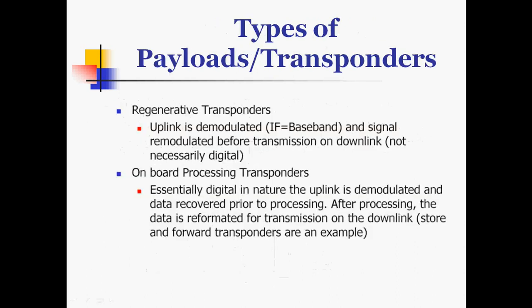There are basically two major types of transponders. Regenerative transponders demodulate the uplink and remodulate the signal before transmission on the downlink. Onboard processing transponders are essentially digital in nature — the uplink is demodulated, data is recovered prior to processing, then reformatted for transmission on the downlink. Store-and-forward transponders are one example of onboard processing transponders.